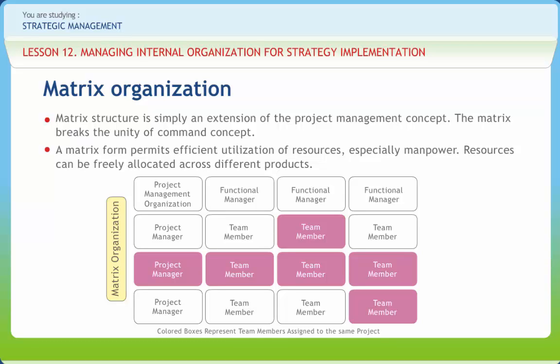Matrix forms encourage constant interaction among project units and functional department members. The direct and frequent contact between different specialties in the matrix can make for better communication and more flexibility. Matrix structures ensure the maintenance of high technical standards. A matrix structure is a way of balancing customers' needs for project completion and cost control with the organization's need for economic cooperation and development of technical capability for the future. It helps employees develop and grow, enlarges their experience, broadens their outlook, and exposes them to a wider arena full of challenges. However, a matrix structure is far from being a cure-all for all the embarrassments, expenses, and delays that plague even the best managed organizations.